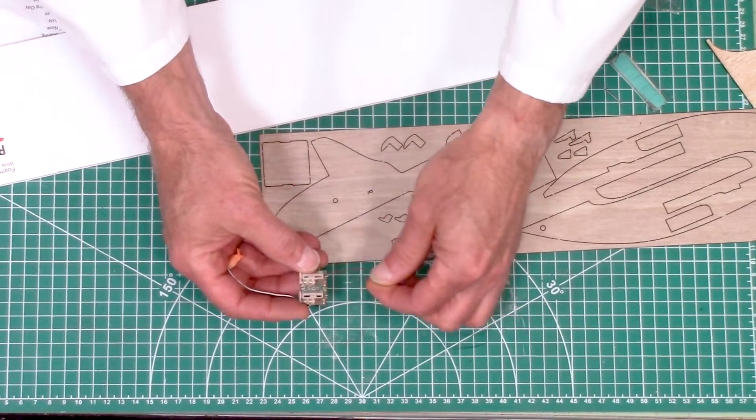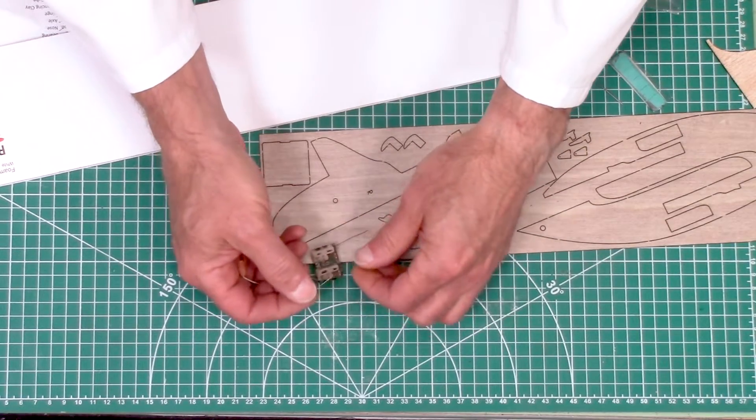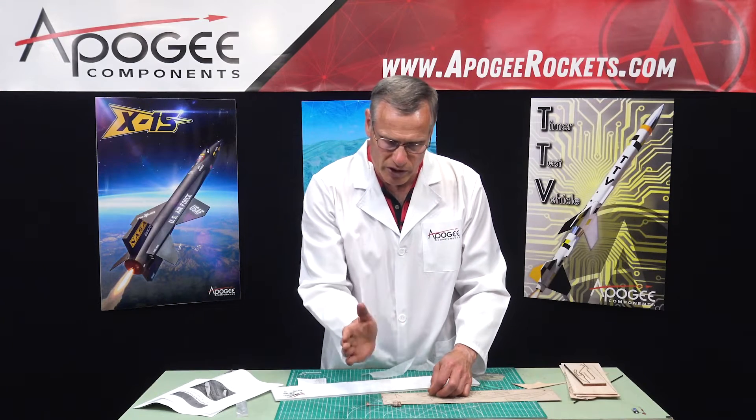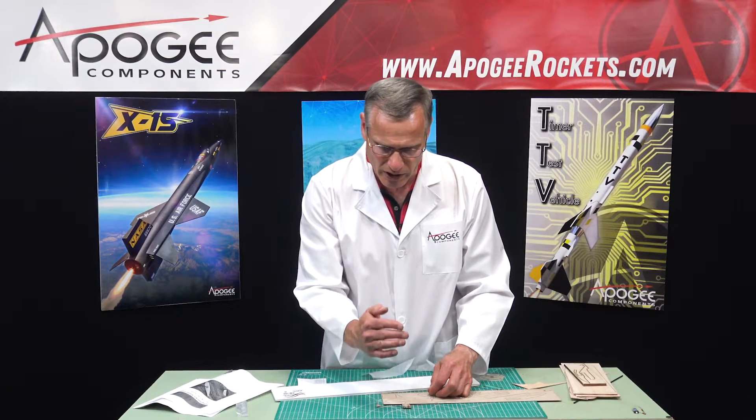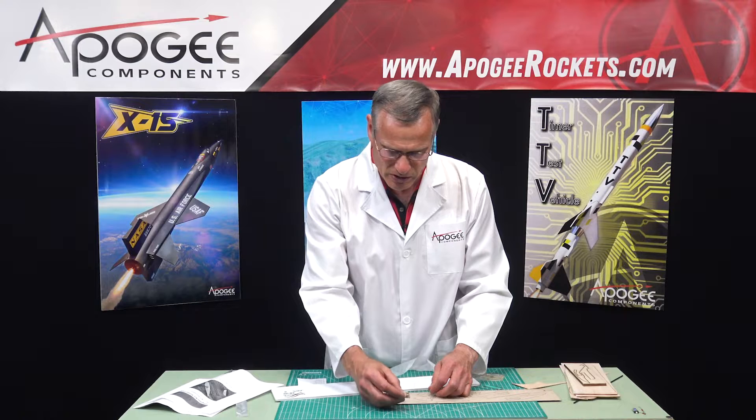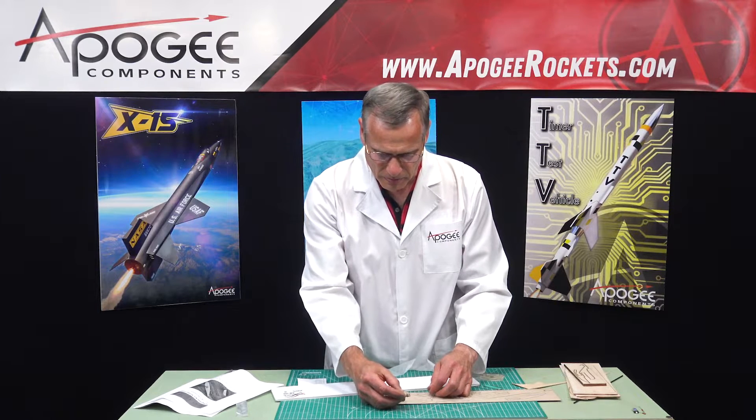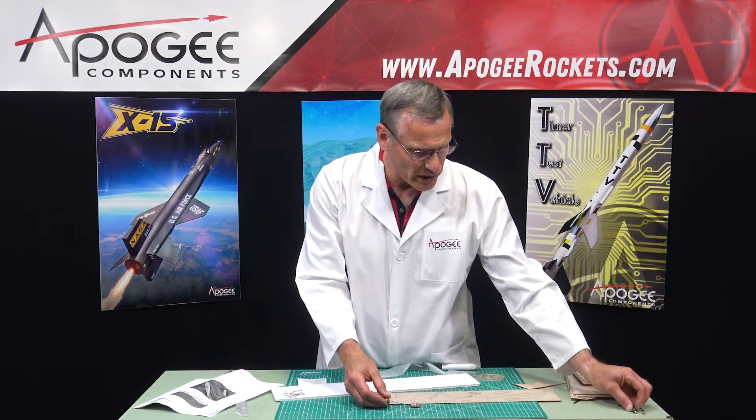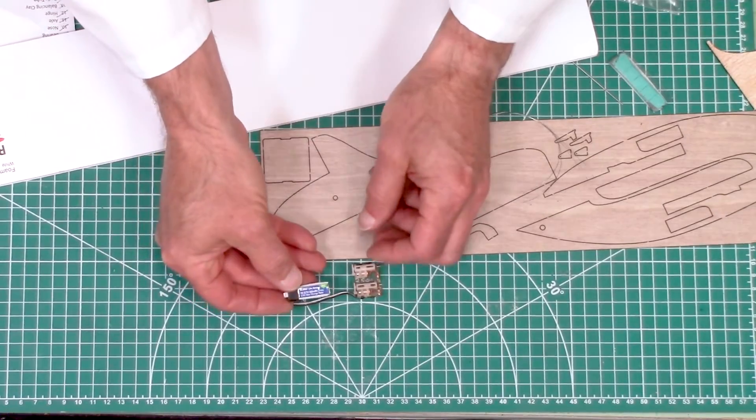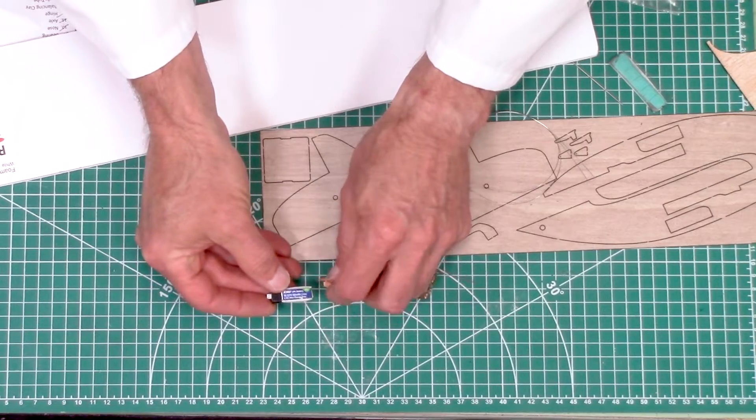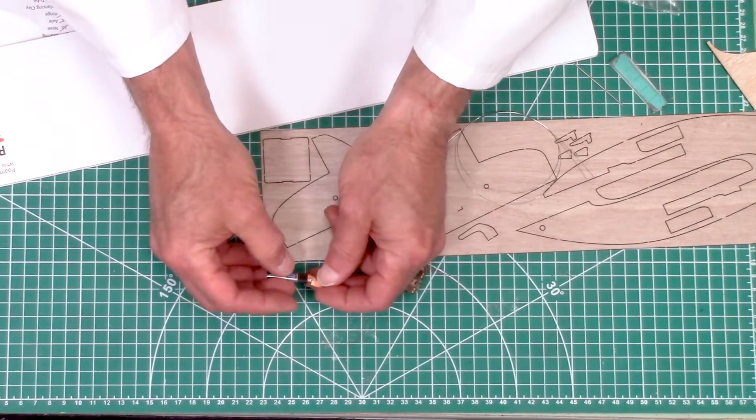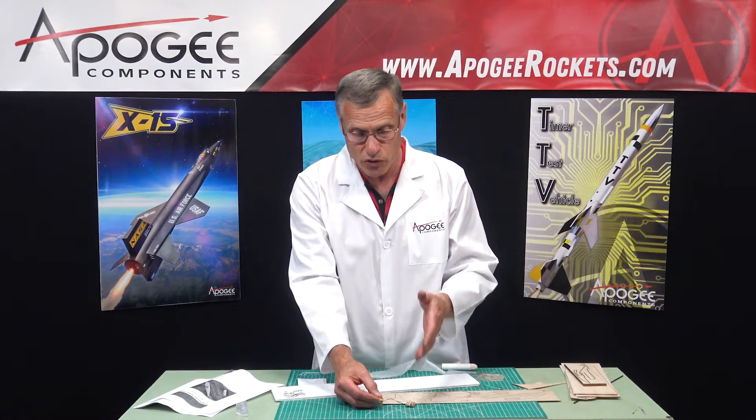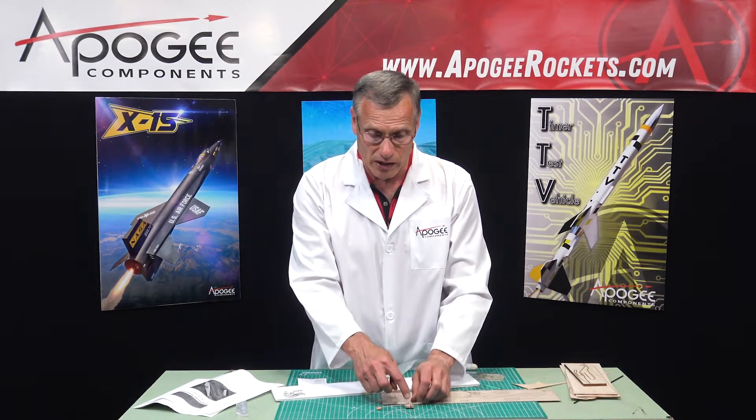So when those servos move, it's going to push these, these are going to be called push rods. It's going to push them back and forth. And that's what's going to move the rudder and the horizontal stabilizer. This also contains the receiver. So the only other thing that you're going to need is a little battery. This is a little lipo, 3.7 volt lipo that you'll connect to it.